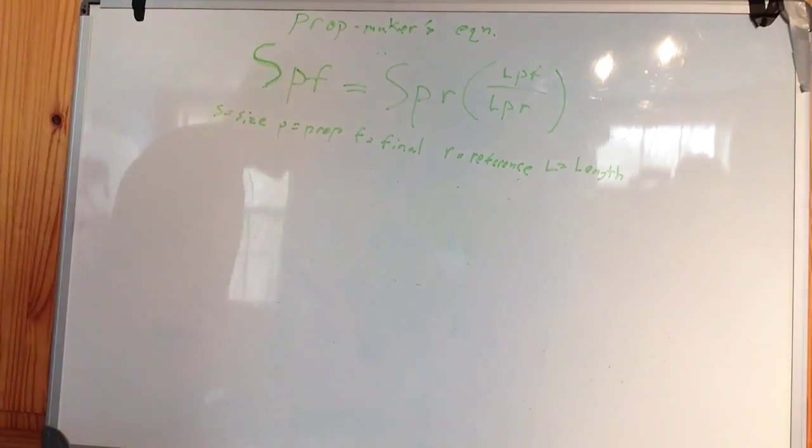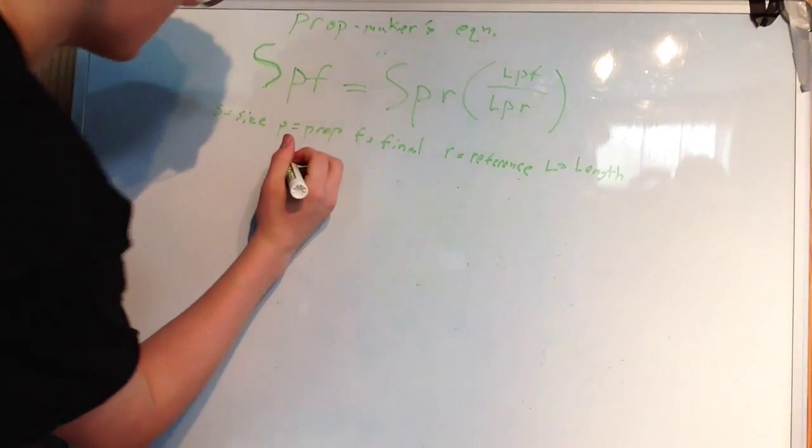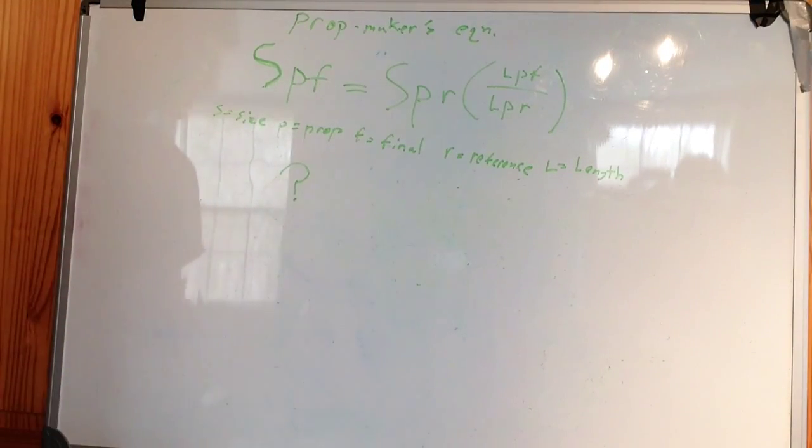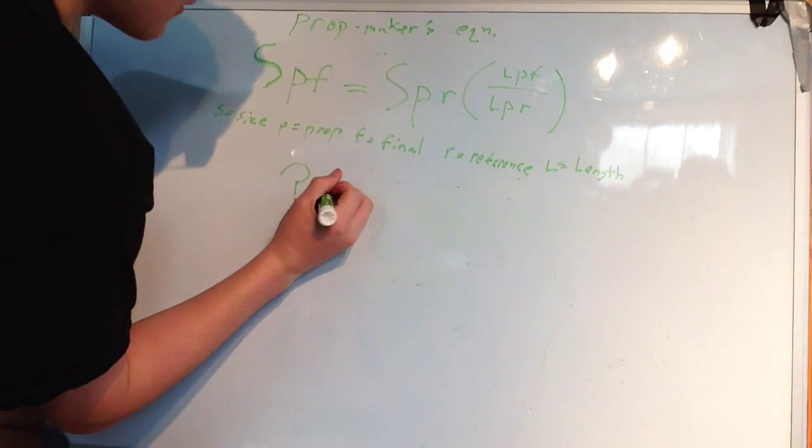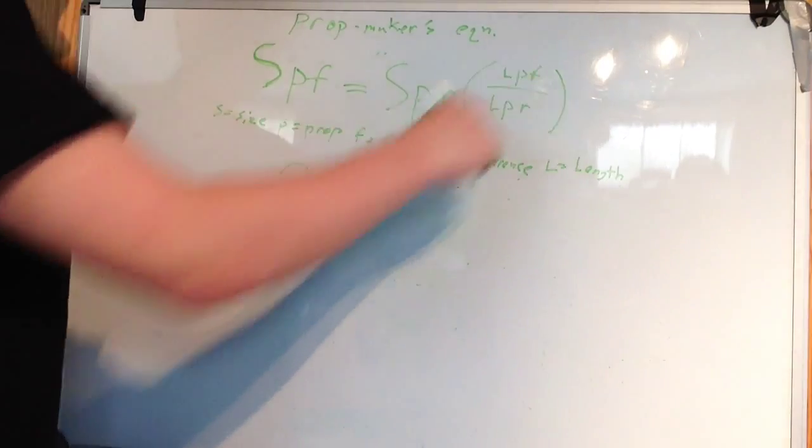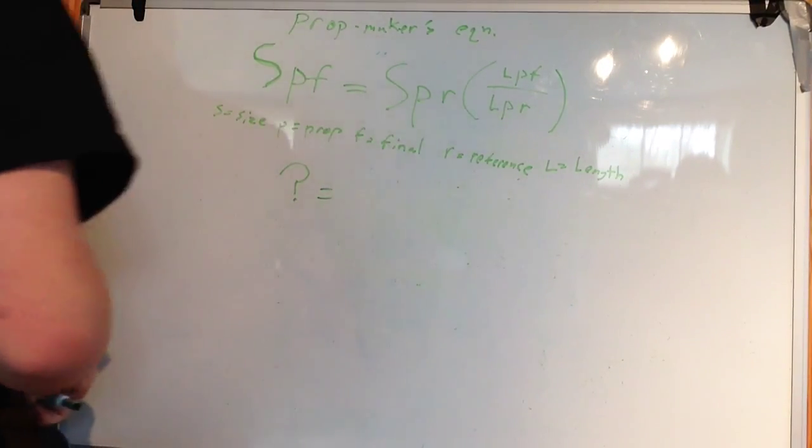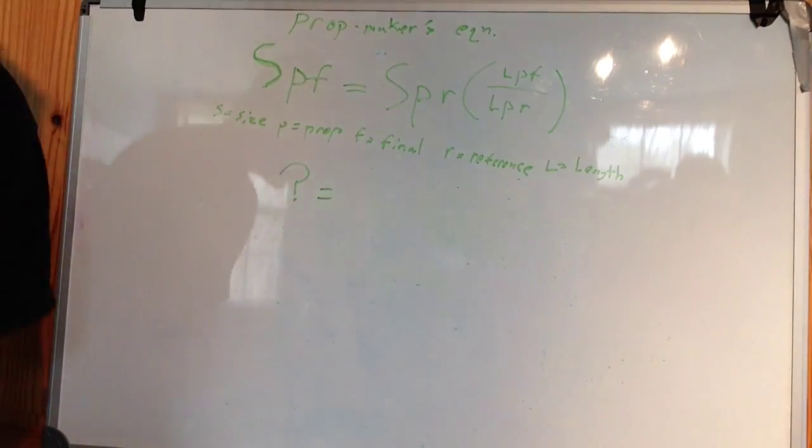So, how do you use this? Well, let's use some numbers. S of PF, that's what we're trying to figure out. That's what we want at the end of the day. That's a question mark. We don't know that. We won't know that until we build the prop. That's how it works. Equals S of PR times L of PF over L of PR. What is S of PR? Size of the prop reference. That's really anything you want to know.